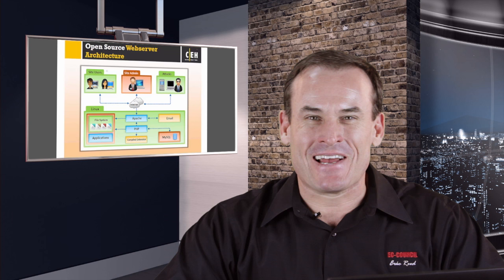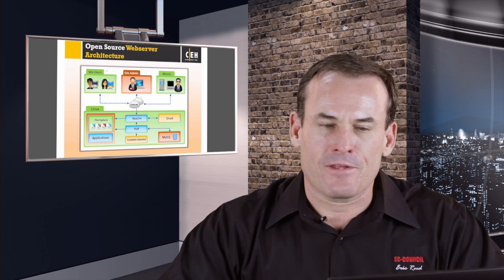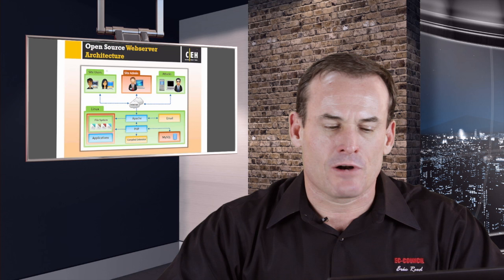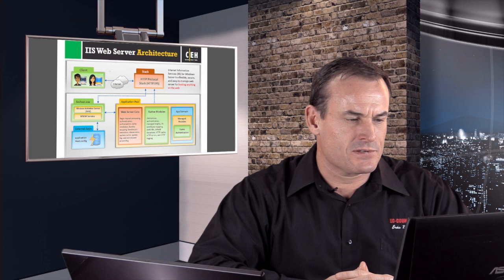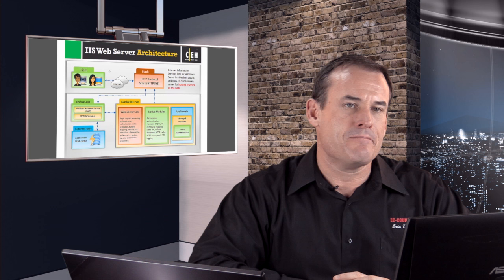For open source web server architecture, you're probably talking about an Apache server, PHP for the application code, a Linux underlying file system, potentially some email functionality, and MySQL for database interoperability. IIS is a bit different — the client connects through the stack to the service host that actually hosts the Windows processes and services, the core itself. There are also potentially native modules that may have weaknesses that could be exploited.